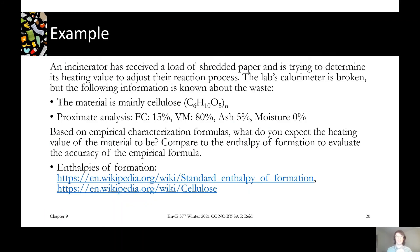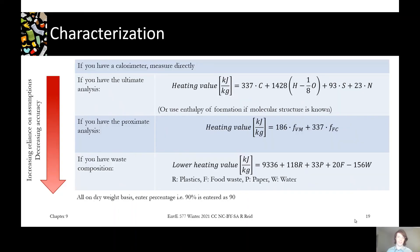So if say you're an incinerator operator, you get a load of shredded paper in and you want to adjust your process to properly account for the amount of heat it's going to produce. Your calorimeter is broken, so you're going to use the information you have. You know it's paper, it's mostly cellulose, and you know the formula for that. You also have some proximate analysis data, and then you have your menu of ways to try and calculate what this can be.